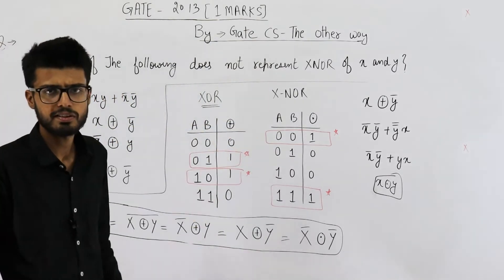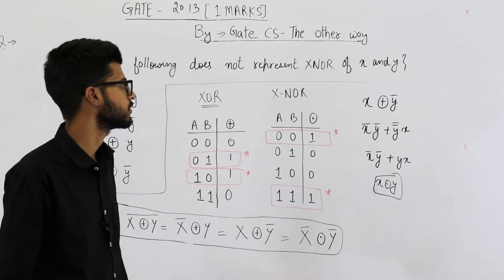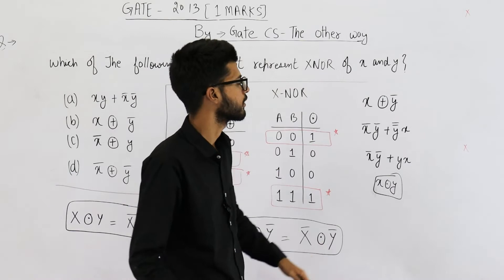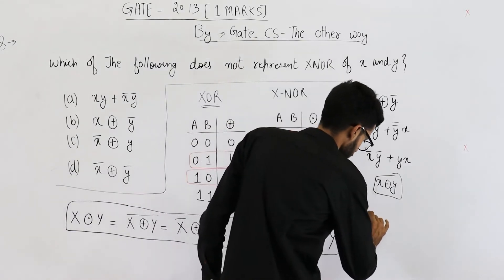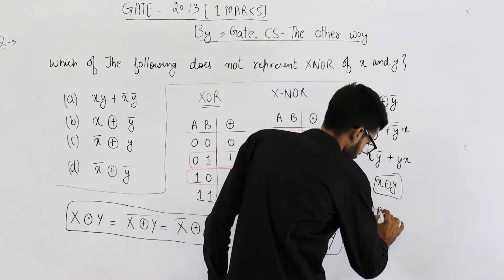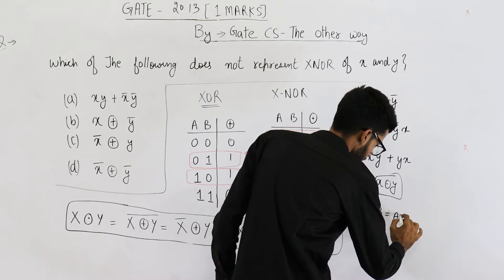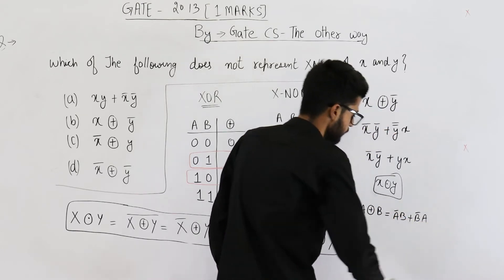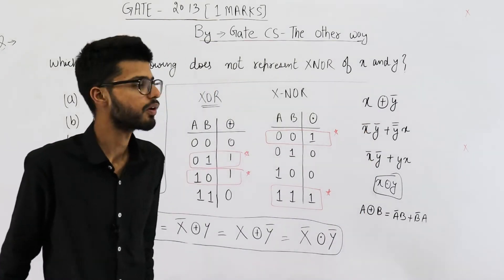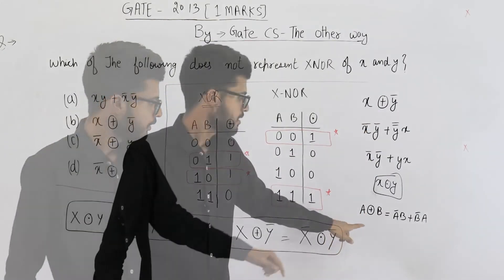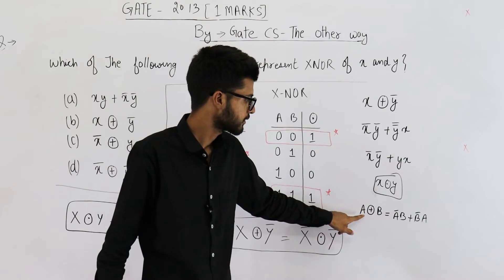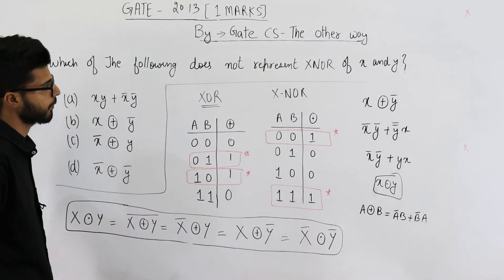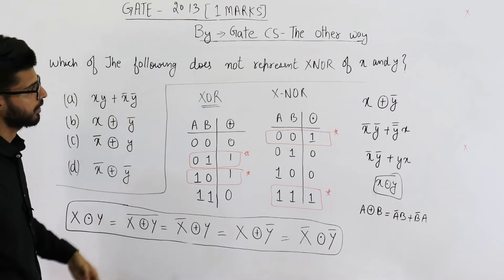Similarly you can prove option C also represents X-NOR of X and Y. The formula I used for expansion is: A X-OR B equals ĀB + B̄A. This is the formula used for expansion. The formula for X-OR is this, and the formula for X-NOR is XY + X̄Ȳ.